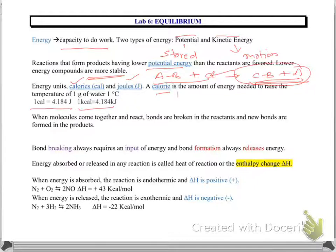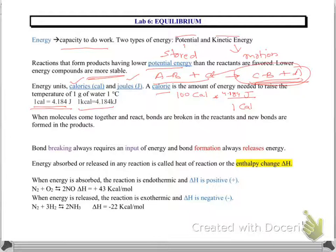For example, if you are given 100 calories and the question is to convert that into joules, you write down 100 calories, then place calories in the denominator and joules in the numerator. We know one calorie equals 4.184 joules — calories cancel with calories — and 100 times 4.184 is 418.4 joules.